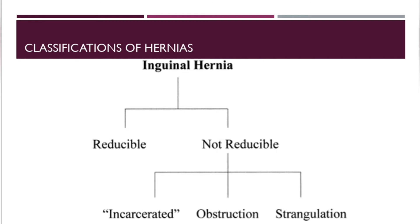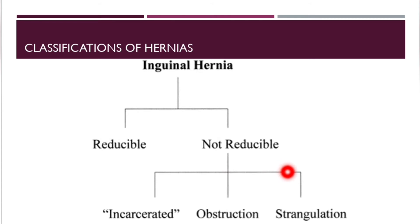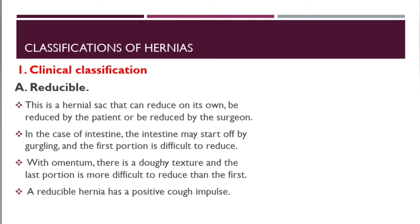Classification of hernias includes clinical classification, etiological classification, and classification according to location. Clinically, a hernia can be reducible or non-reducible, and the non-reducible state can lead to complications like incarceration, obstruction, or strangulation. A reducible hernia is one that can reduce on its own, or be reduced by the patient or by the surgeon.